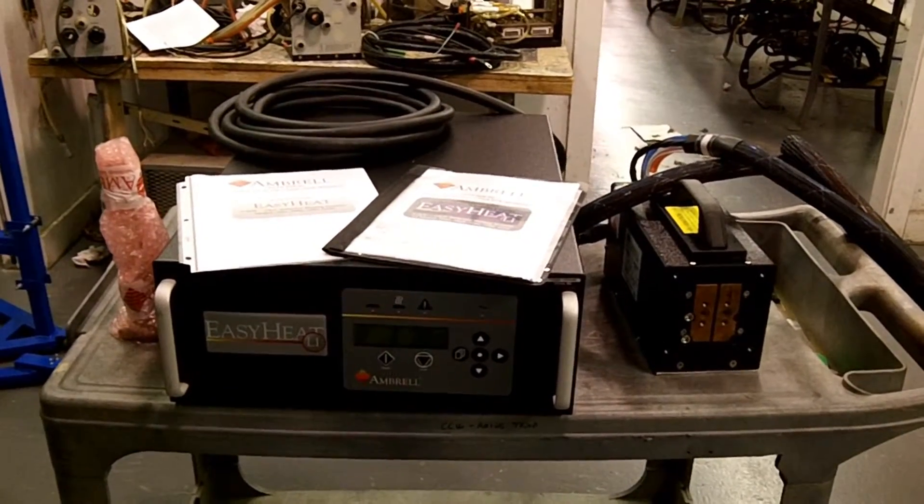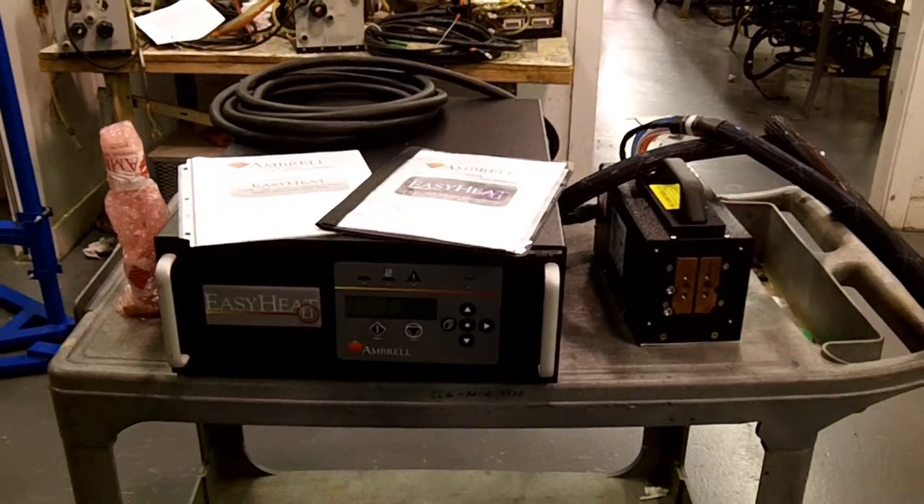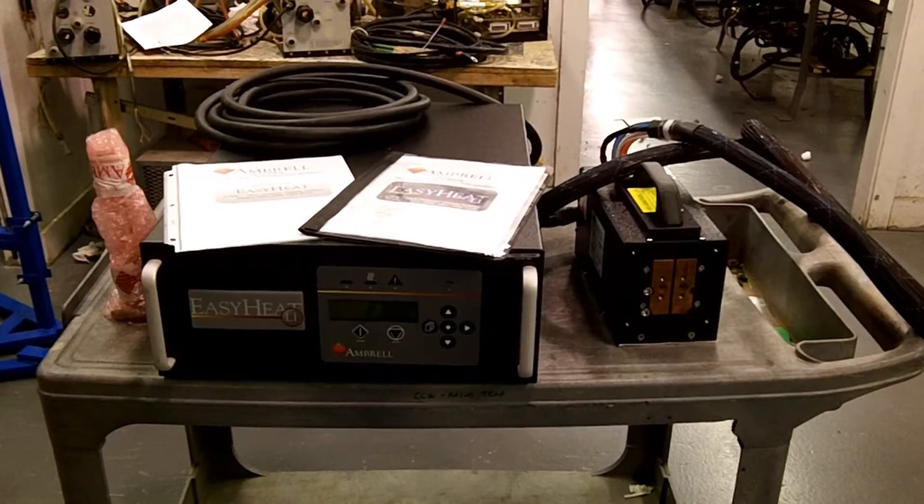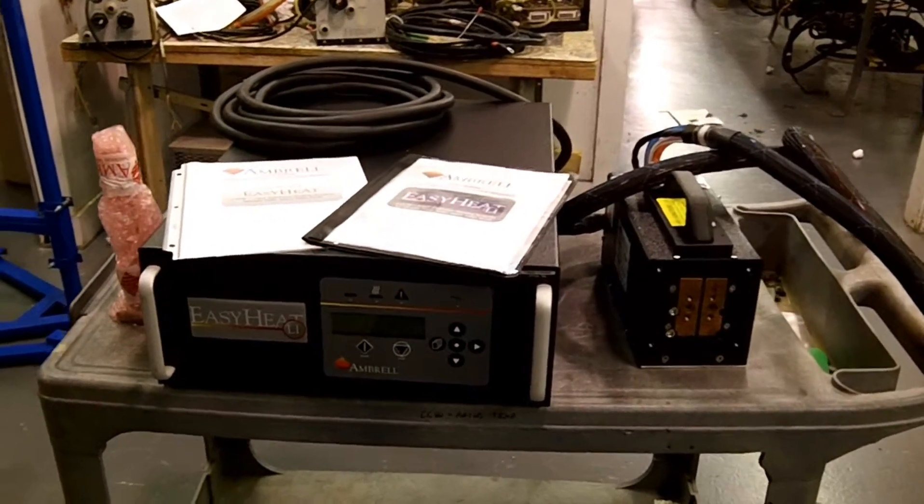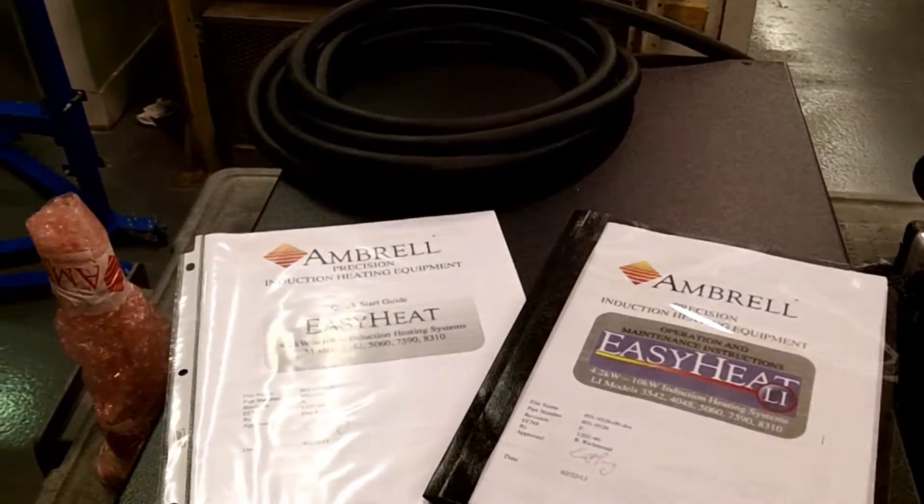Now let's take a closer look at the contents that were in the two packages. You can see that the workhead is on the right, then the power supply is next to it on the left, the manual is on top of the power supply, and to the left you can see the test coil, which is all wrapped up in package.